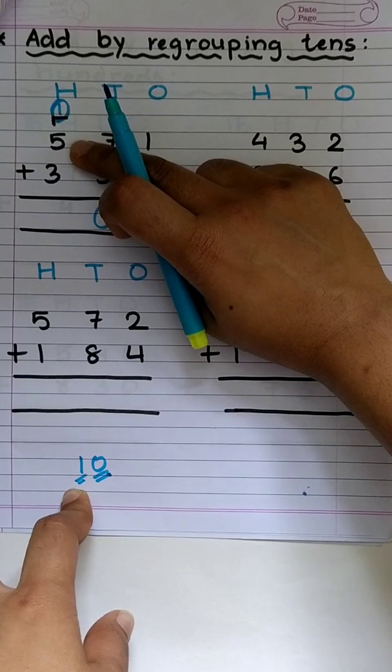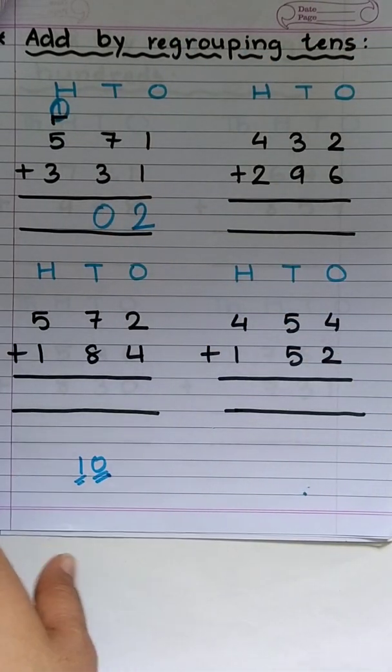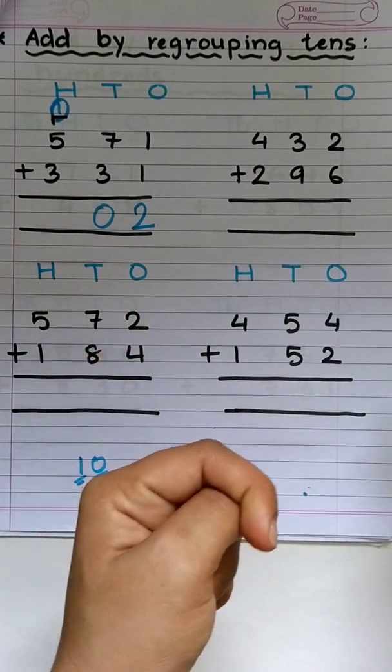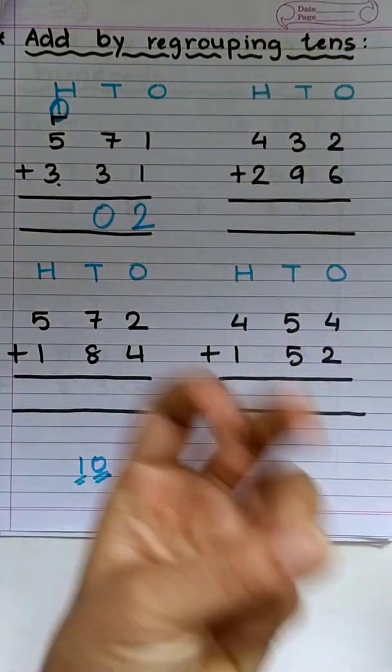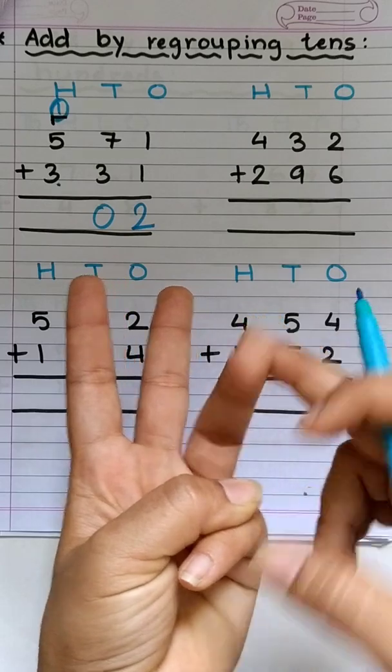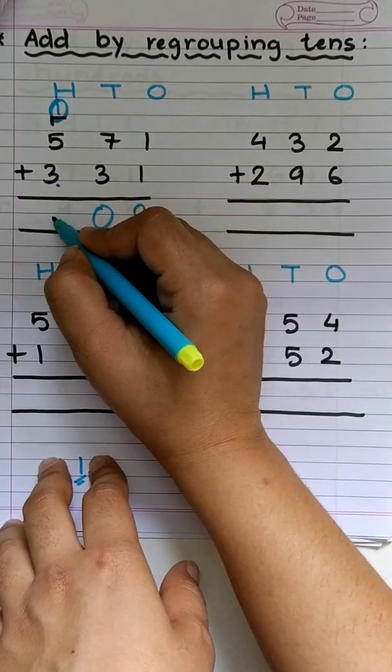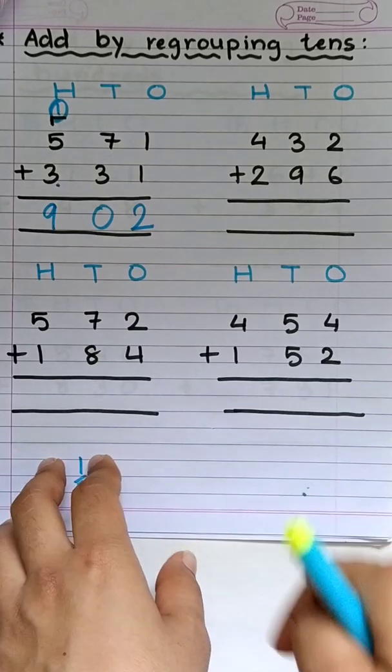So 1 plus 5, 5 on the mind, 1 on finger, 5 plus 1 is 6. Now 6 plus 3, after 6, 7, 8, 9. So the answer is 902.